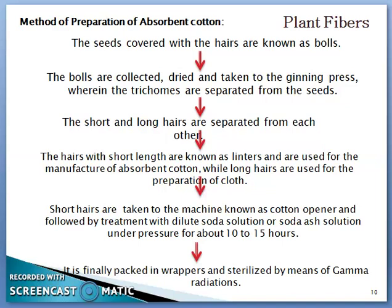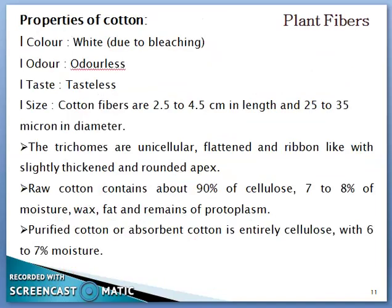Note that gamma radiation is a very important method of sterilization of absorbent cotton. Properties of cotton: it is white, odorless, and tasteless. The trichomes are short hairs consisting of 2.5 to 4.5 cm in length (average) and 25 to 35 microns in diameter. The trichomes are unicellular, flattened, and ribbon-like, slightly thickened at the rounded apex. Raw cotton contains 90% cellulose, 7–8% moisture, wax, fat, and remnants of protoplasm. Purified absorbent cotton is entirely cellulose with only 6–7% moisture.